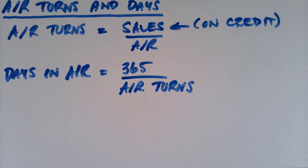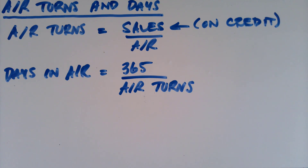We could do something very similar with AR turns and days. AR turns are defined as sales divided by accounts receivable. A couple of things to notice: first, we are using sales, not cost of goods sold, because sales and AR are at the same price. If I sell $10 worth of goods on credit, it shows up in both sales and accounts receivable as $10 — an apples-to-apples comparison. Second, we are talking about credit sales because if we don't sell on credit, it doesn't show up in accounts receivable. Unless told otherwise, assume all sales are on credit, which is fairly close to true for most American businesses.